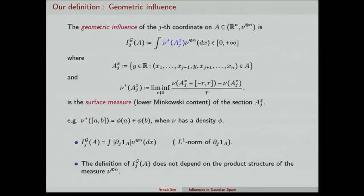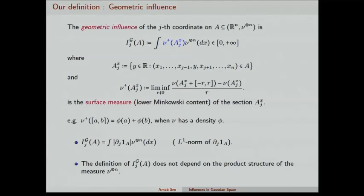A remark: this definition of geometric influence that we introduced does not depend on the product structure of the measure — you can do it for an arbitrary measure. Of course, you don't have interesting theorems for a fully general measure. What is the geometric interpretation? In the discrete case, the sum of the influences is connected to the edge boundary. We have something similar here.